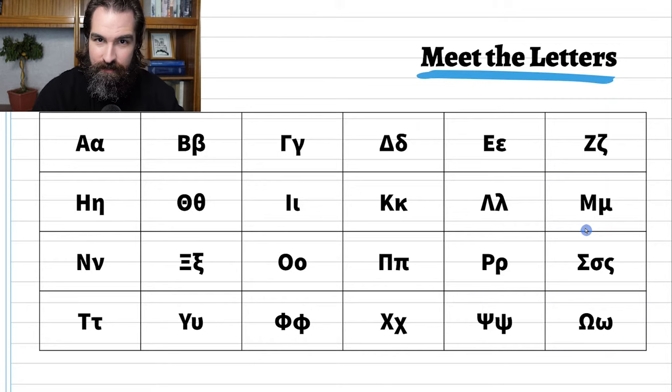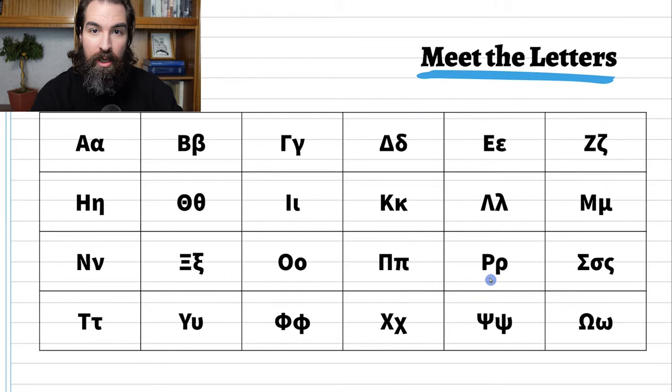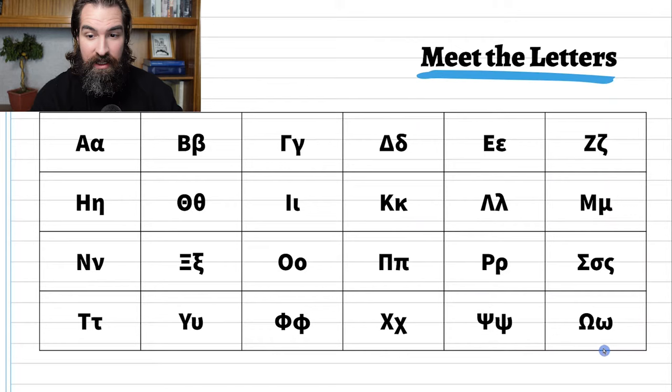Nu, xi, omicron, pi, rho, sigma, tau, upsilon, phi, chi, psi, omega. Those are the 24 letters of the Greek alphabet.